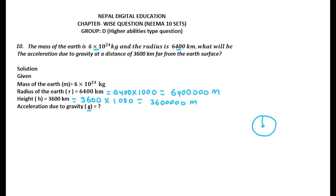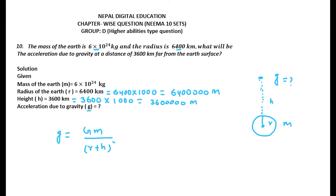So the radius R is given, and the mass of the Earth is given. The height is 3600 km. We have to find the value of g. The formula is: g = GM divided by (R + h) whole squared.